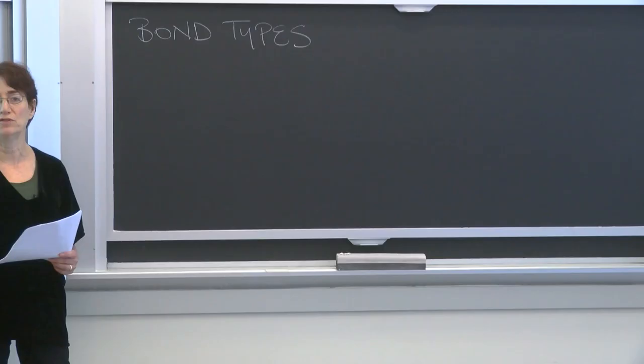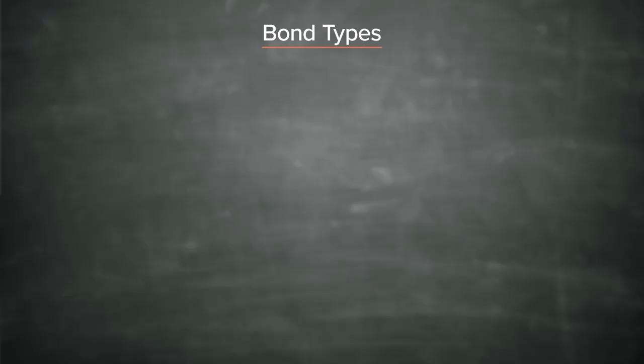Let's talk about bond types, and I'm going to distinguish four, two of which are going to be kind of a joint class. There are ionic bonds, covalent, hydrogen.